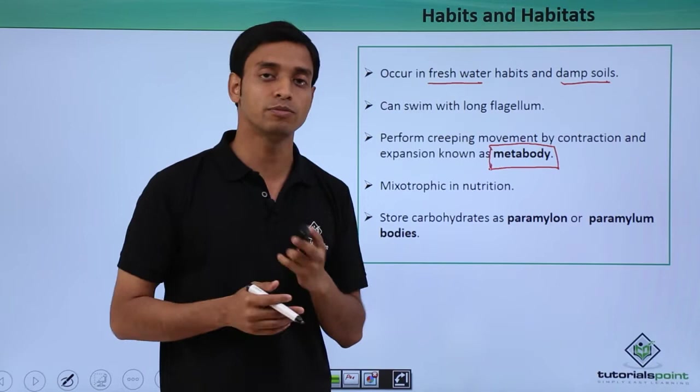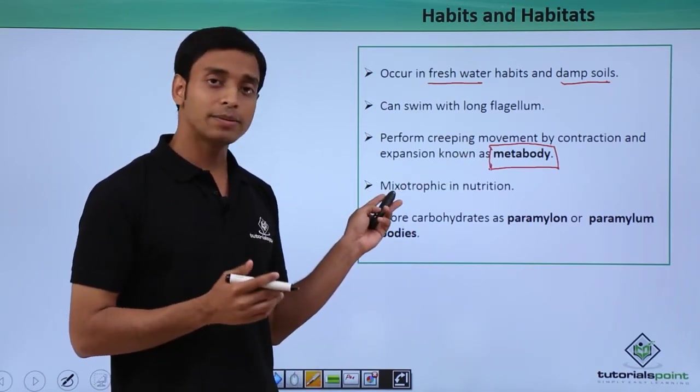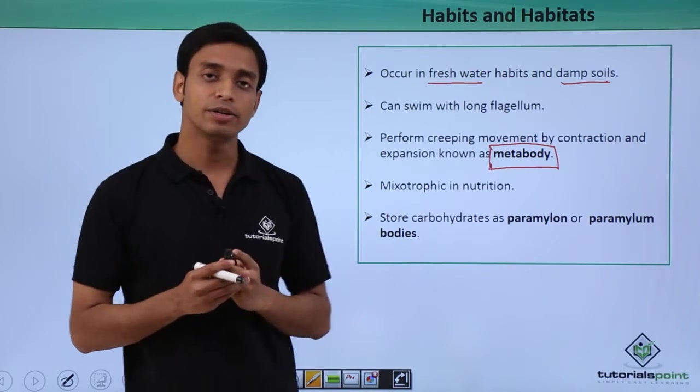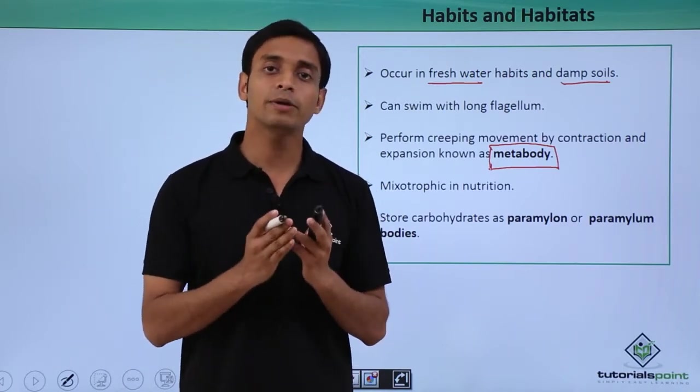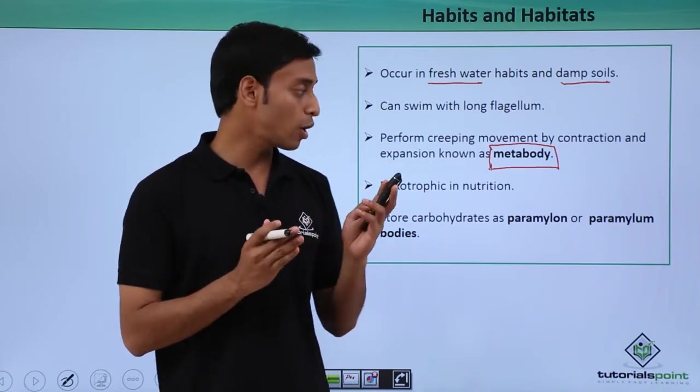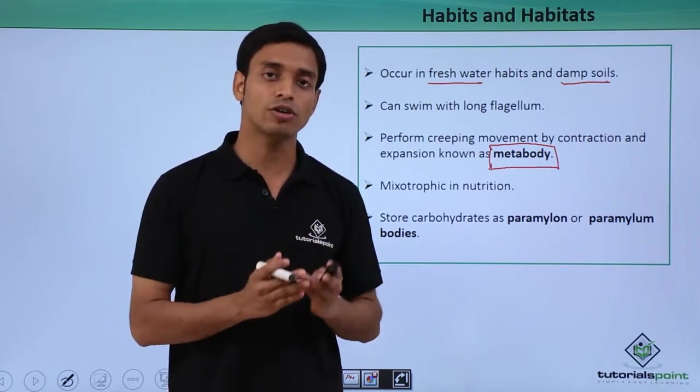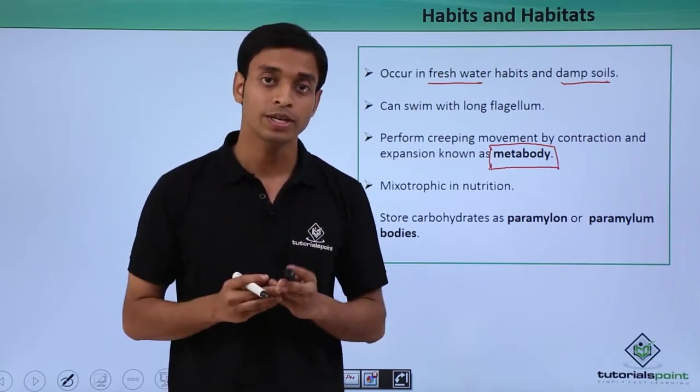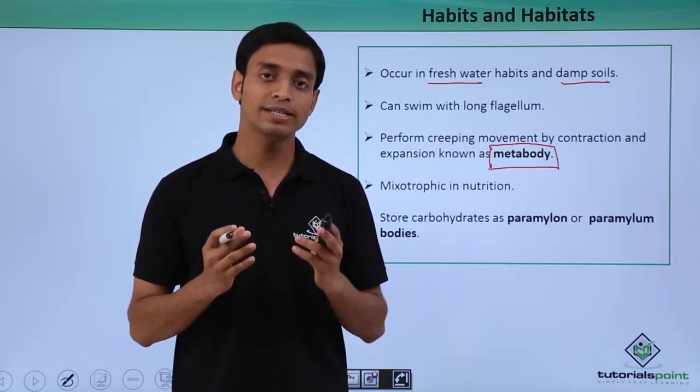They are mostly mixotrophic in nutrition. What do we mean by mixotrophic? They can be holophytic, that means they can prepare their own food from carbon dioxide, water, and sunlight in the presence of photosynthetic pigments like chlorophyll. They can also be saprobic or saprophytic.